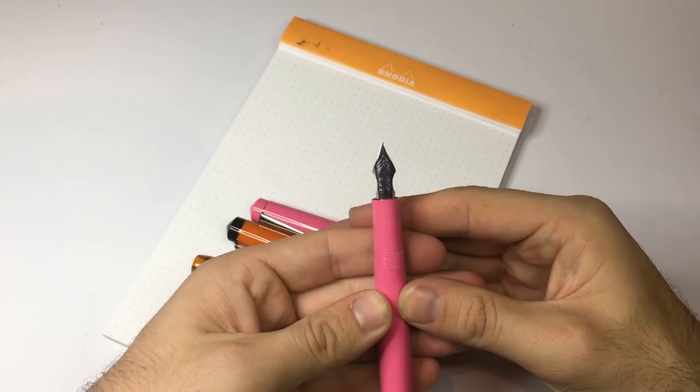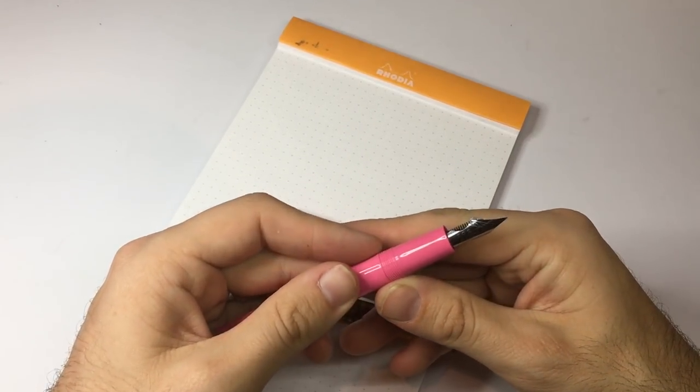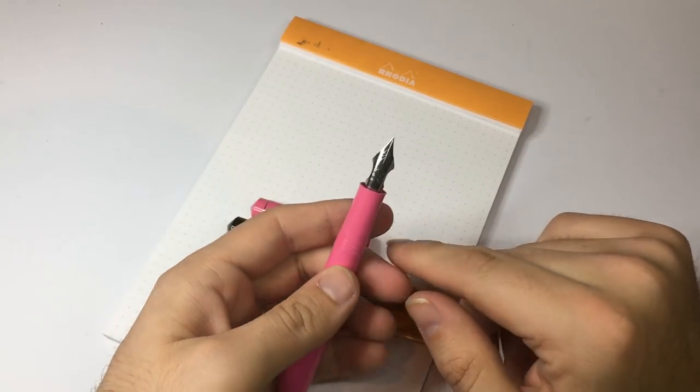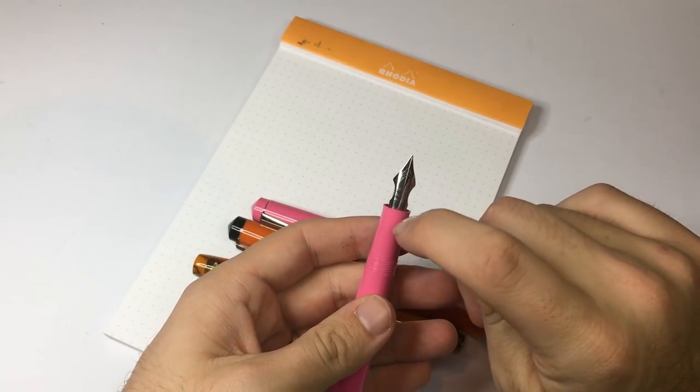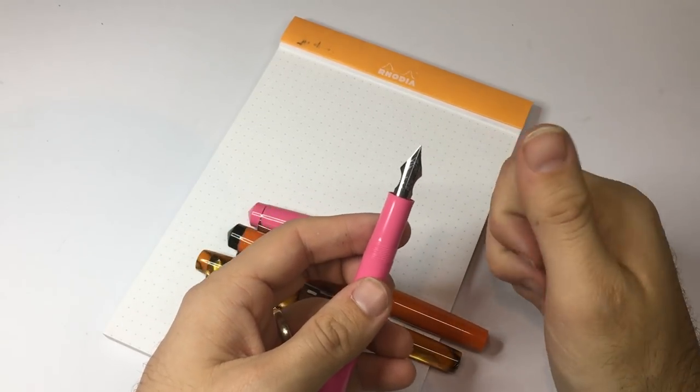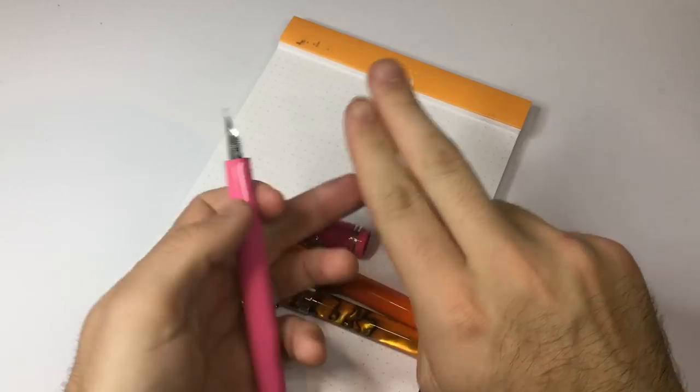Branded with the Fountain Pen Revolution logo. And then on the pink Darjeeling we have the new or relatively new ultra flex nib branded with FPR and flex. You can see now this nib has a much longer slit.